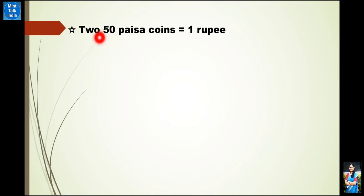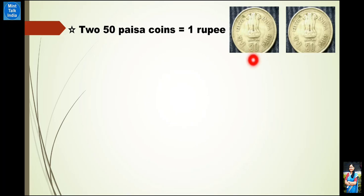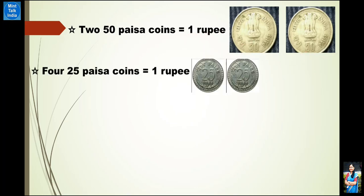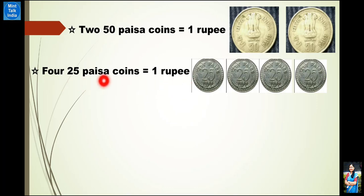Hundred paisa together will equal to one rupee. Two fifty-paisa coins also will make one rupee — fifty paisa plus fifty paisa equals hundred paisa, which equals one rupee. Similarly, four twenty-five paisa coins will add up to make one rupee. Twenty-five paisa को अगर हम चार बार add करते हैं — 25 + 25 + 25 + 25 — we will get hundred paisa, and hundred paisa is equal to one rupee.